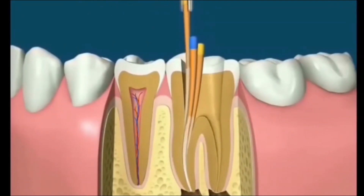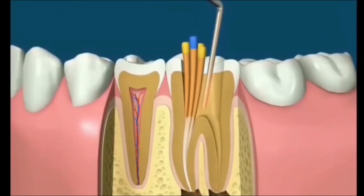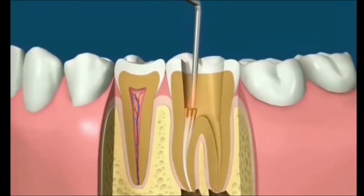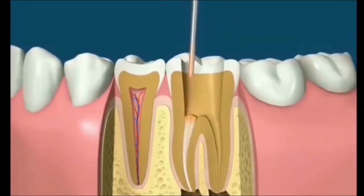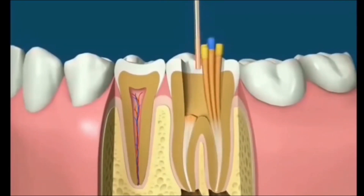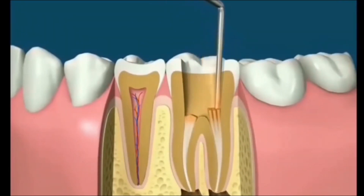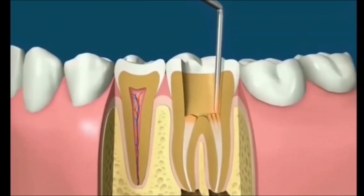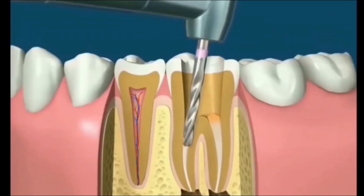The excess rubber cones can be removed with a heated instrument. The heated instrument can also be used to heat and compact the cones to better fill the canal space. For optimum treatment, one or more posts may be placed to strengthen the tooth.